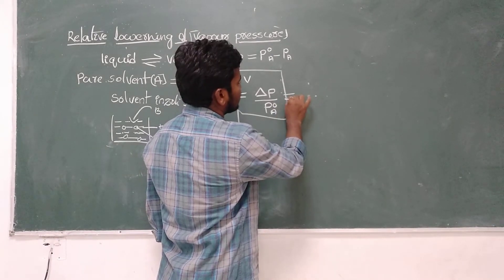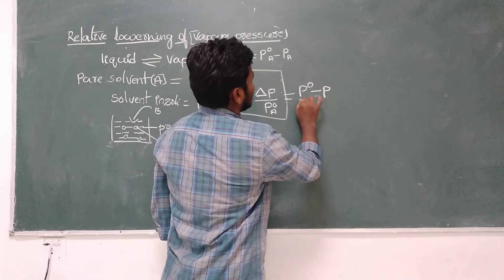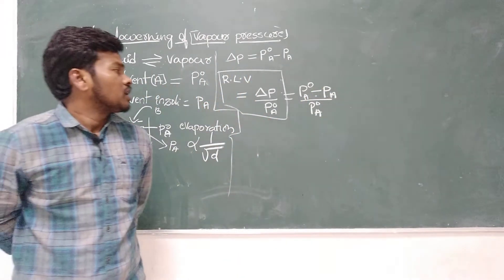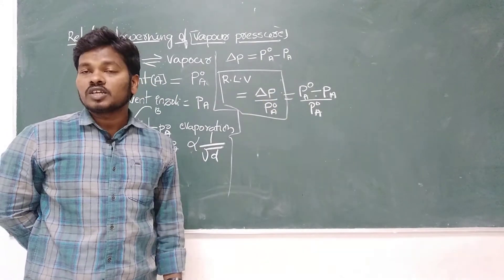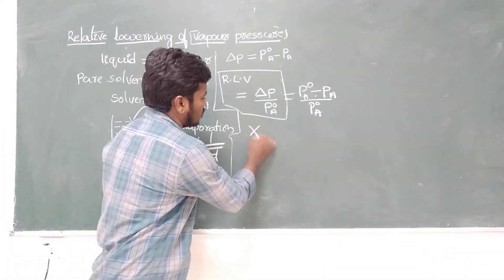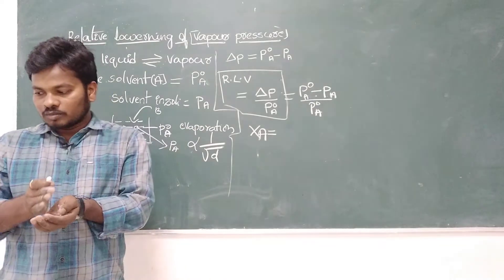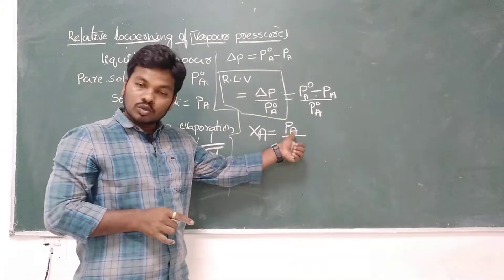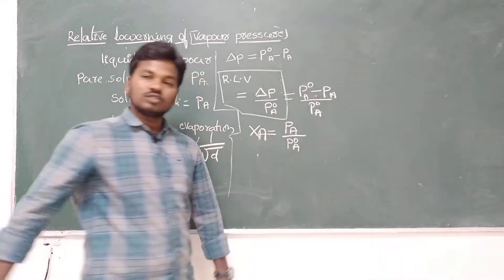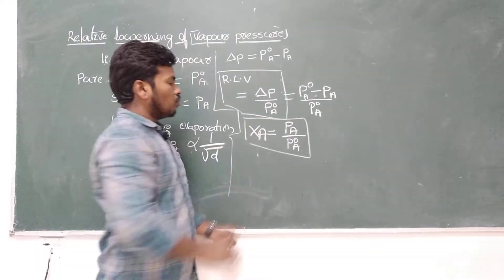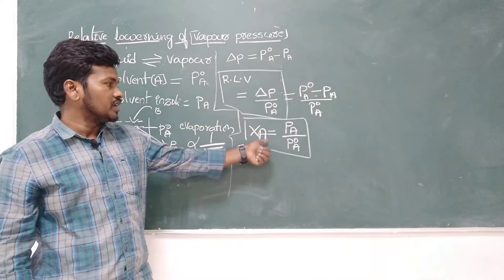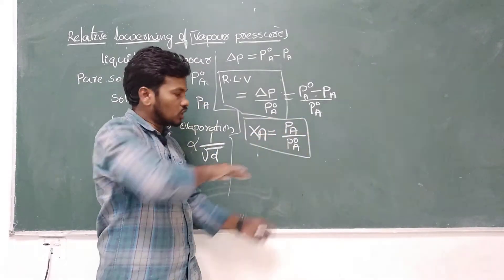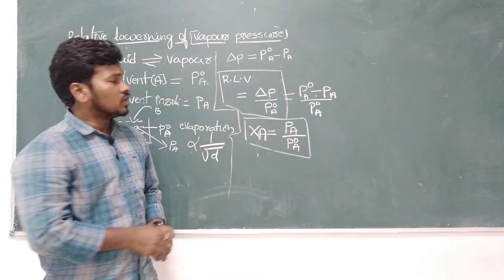This is converted using Raoult's law. ΔP/P₀ₐ — as per Raoult's law, the mole fraction of the solvent (xₐ) is equal to the ratio of the vapor pressure of the solvent in solution to the vapor pressure of the pure solvent: xₐ = Pₐ/P₀ₐ. You have to remember this step — everything follows from it.